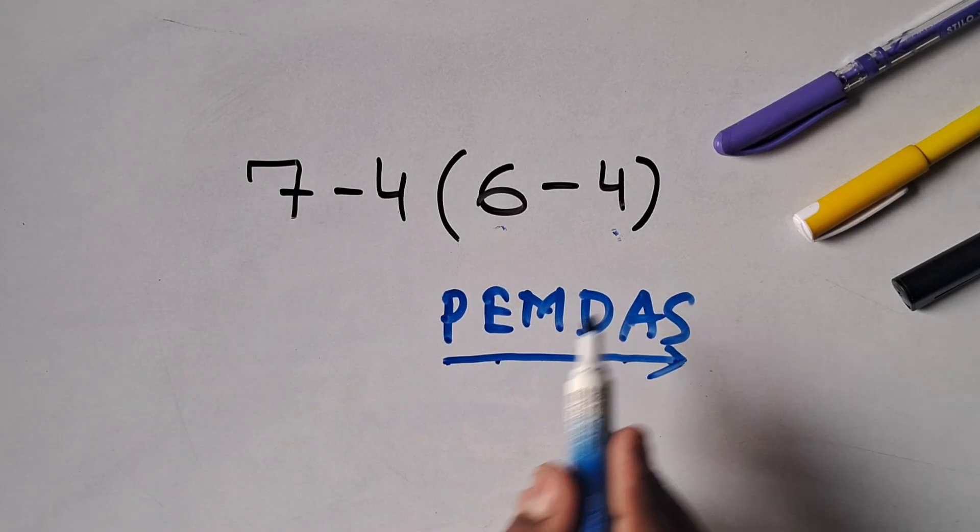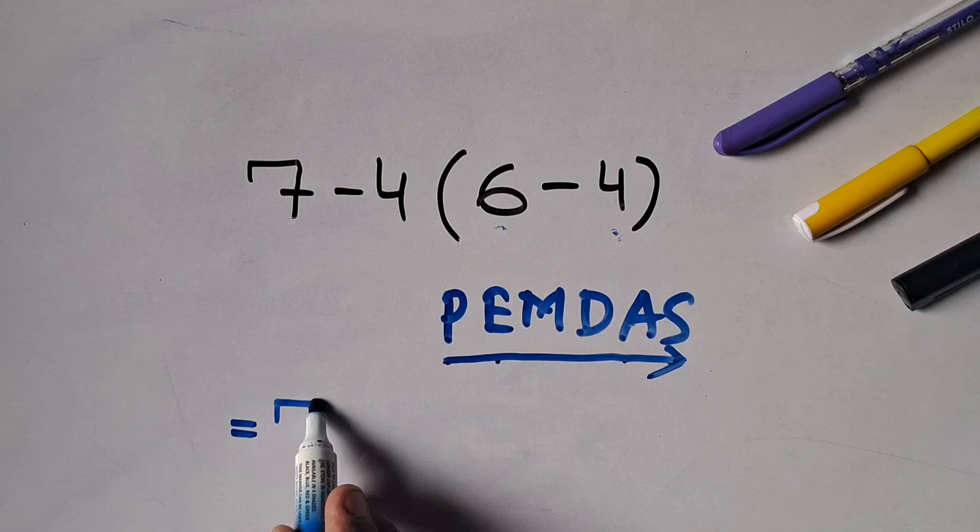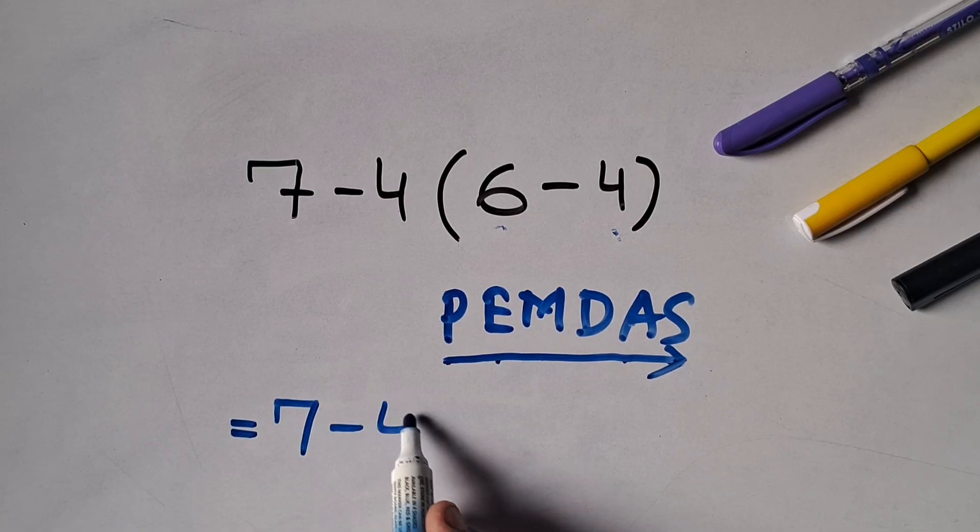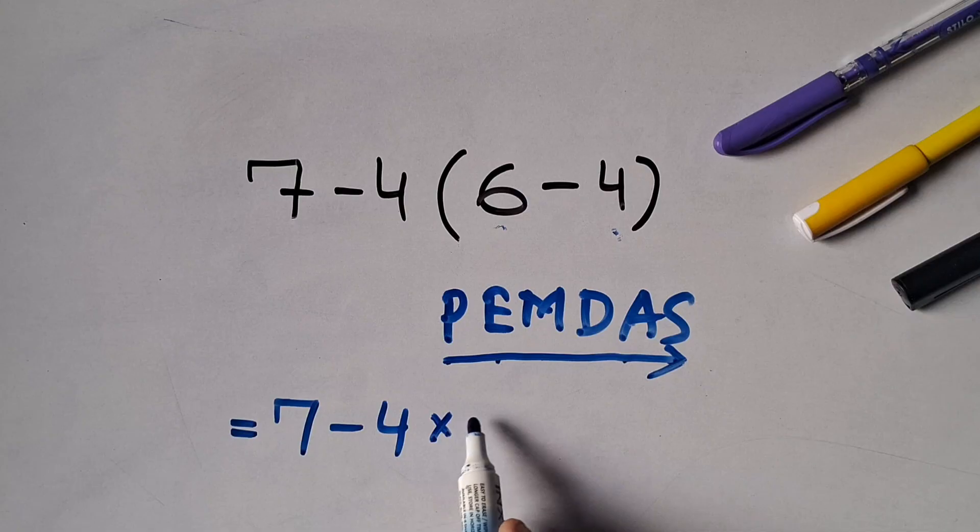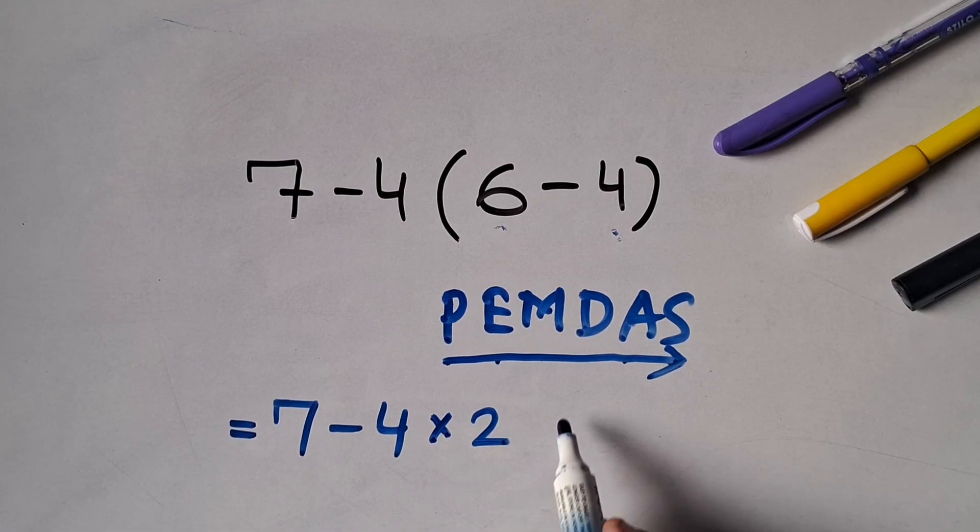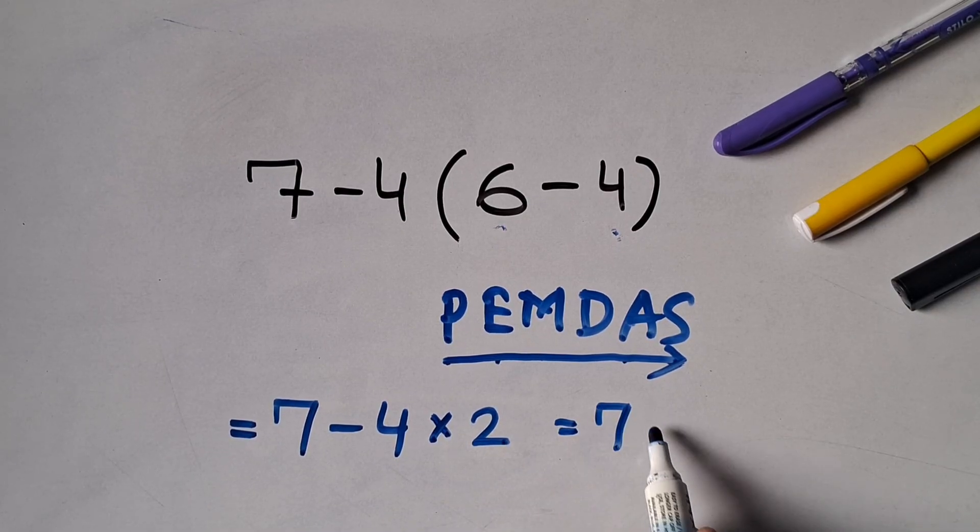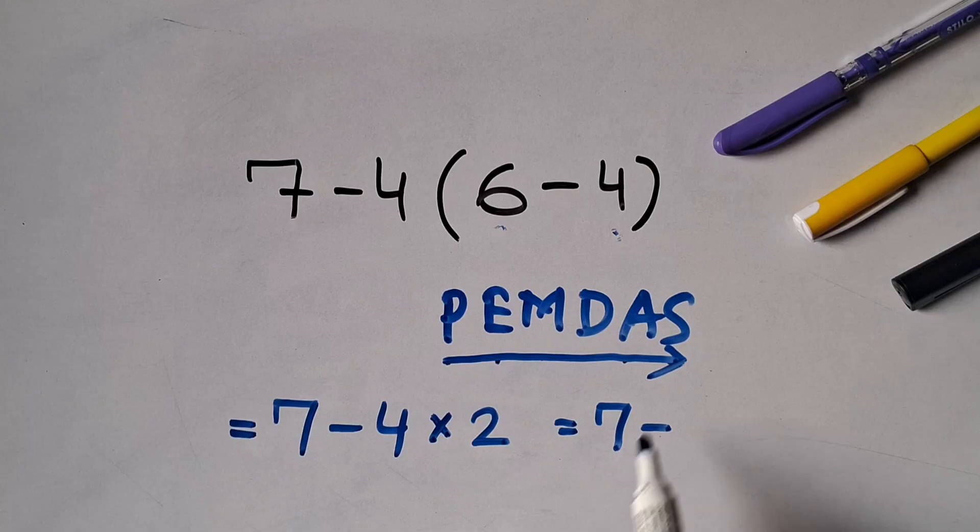Let's solve this expression according to the PEMDAS rule. First we have to solve the bracket, so 7 minus 4 times (6 minus 4 equals 2). Now, as multiplication has higher priority than subtraction, we have to solve 4 times 2 first.